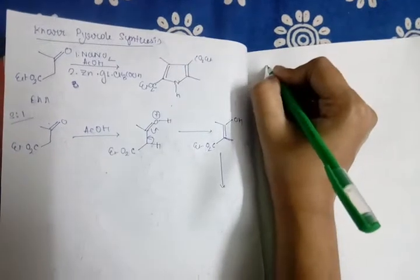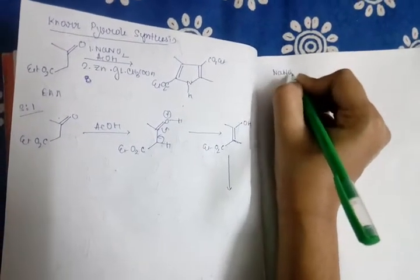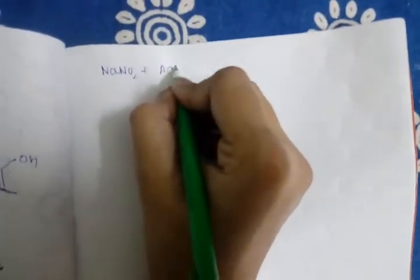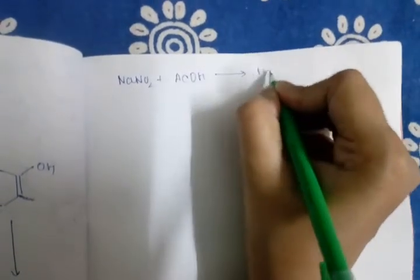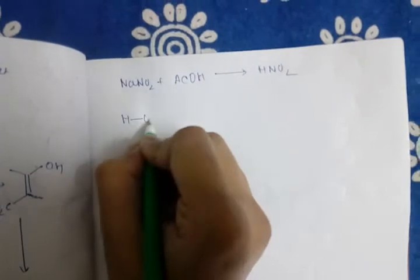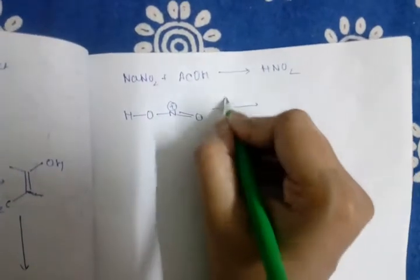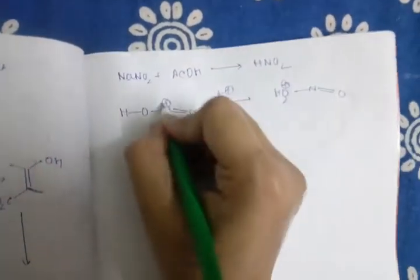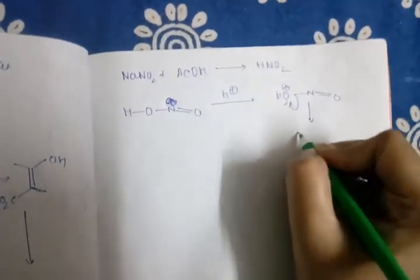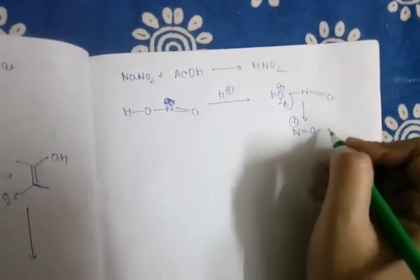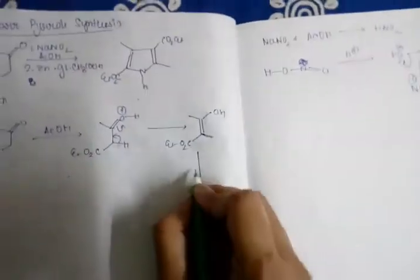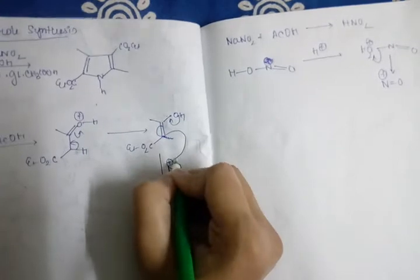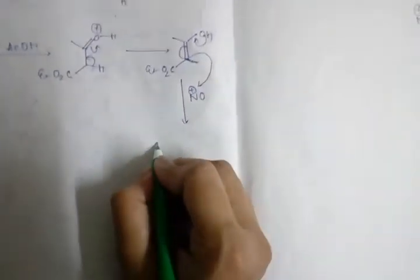Actually, aniline plus acetic acid gives an imine, which in presence of H+ forms an OH positive form. This will leave as an enol positive ion, N positive. This is an electrophile. Now the enol of ethyl acetoacetate will attack this electrophile here. The amine group is added.